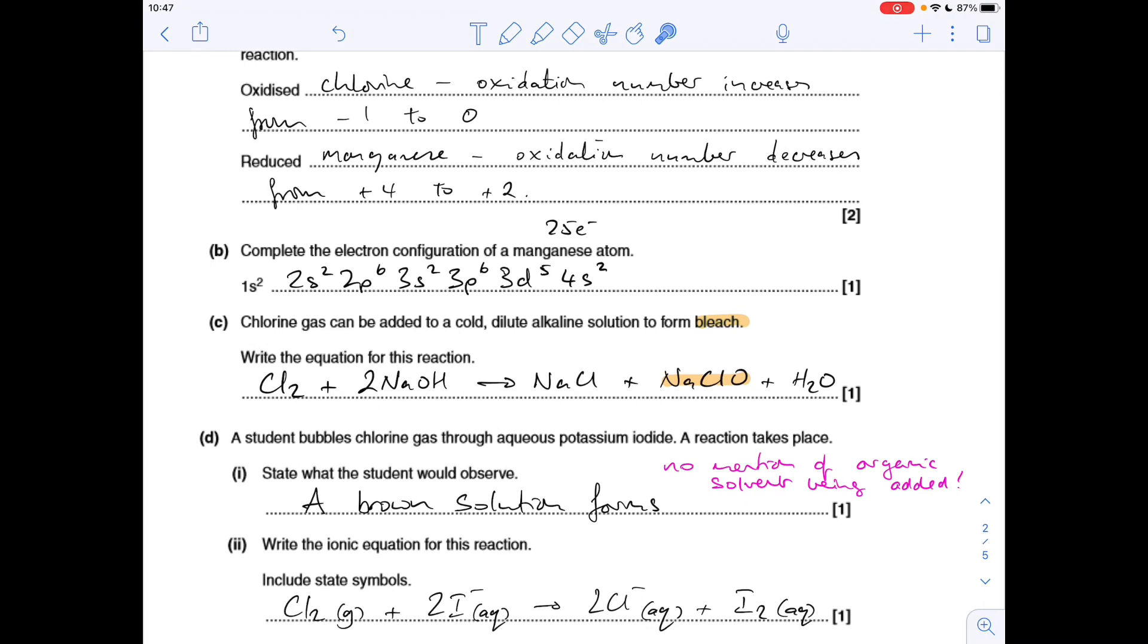The equation for the reaction between chlorine and cold dilute alkaline solution to form bleach. Well bleach is sodium chlorate one, so the alkaline solution is sodium hydroxide. There's the equation.